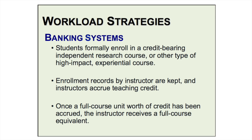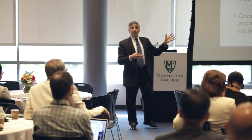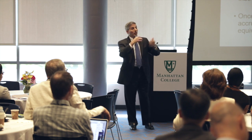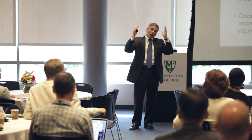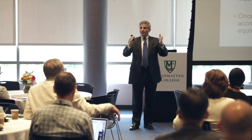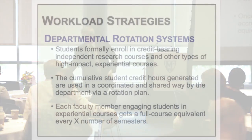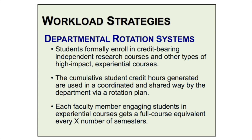Banking systems are used a lot around the academy. Students formally enroll in a credit-bearing independent research course or other high-impact experiential course; enrollment records are kept by instructors and they accrue teaching credit. Once a full course unit worth of credit has been accrued, the instructor receives a full course equivalent. A key to this — and every one of these systems — is that students enroll in the course and pay tuition and fees on it, and it's included within the department's curriculum. One thing I don't like about banking systems: you do the work up front and might not get the credit when you need it — that's where the flexible weighting system comes in.